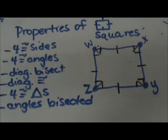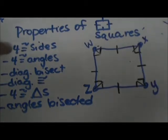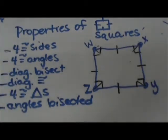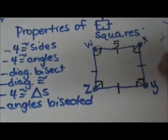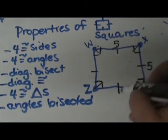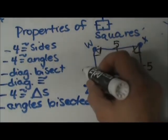Squares are kind of the perfect quadrilateral, so there are lots of properties. The first property is that all four sides are congruent. By definition that makes a square, so all four sides are marked congruent. If this side is 5, this side would also be 5, and 5, and 5.